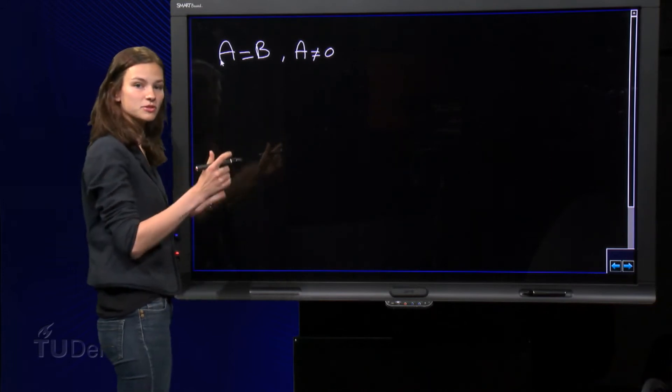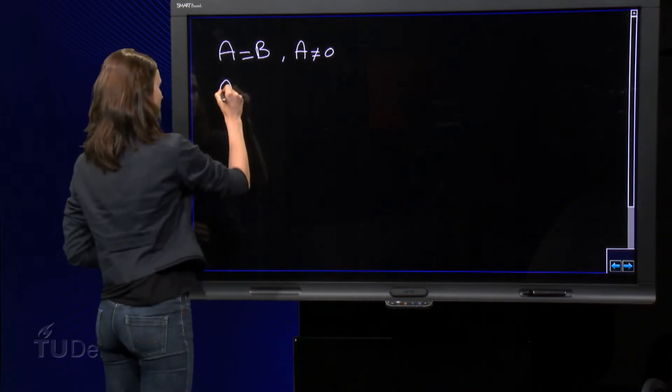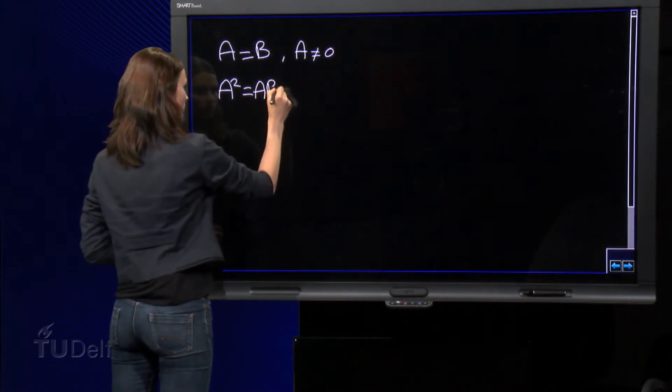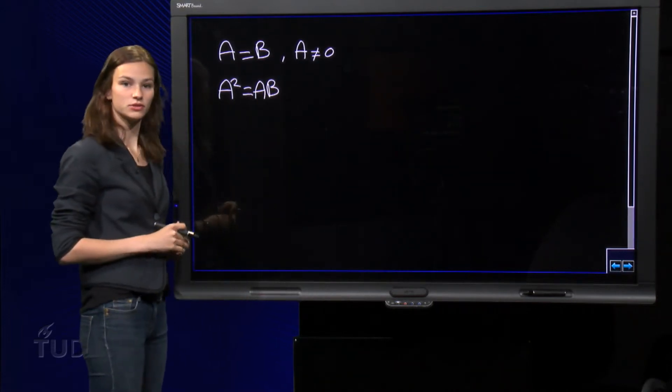Now, we multiply both sides by A and we subtract B squared.